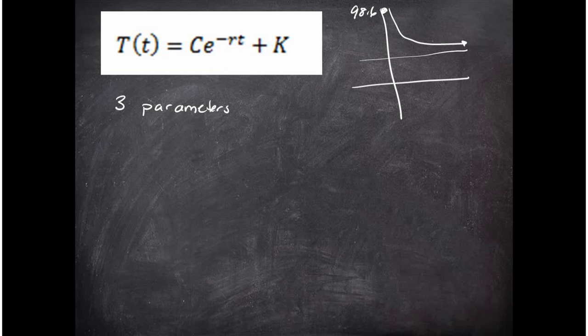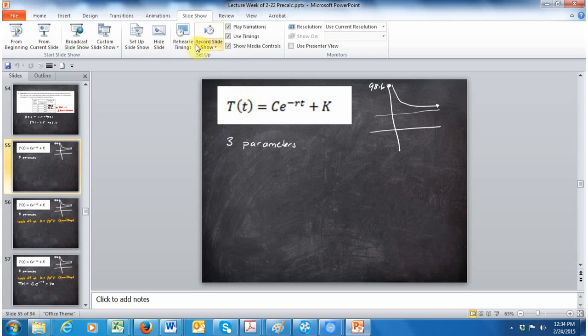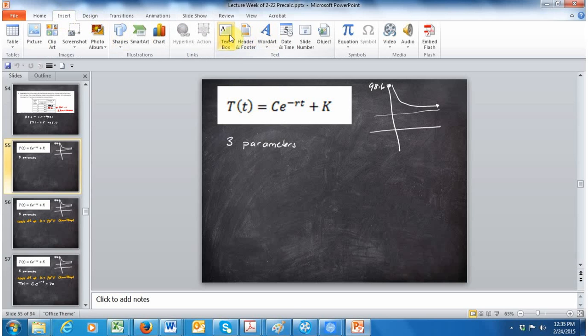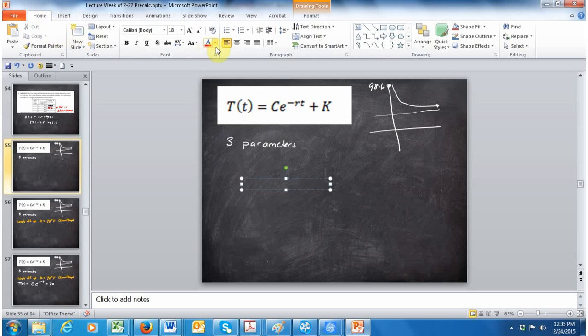For computer scientists, they actually write e in terms of a function. They write exp of t, and I'm going to put this up here so you can see it.